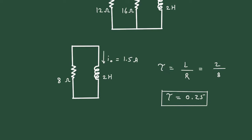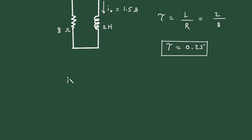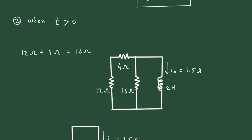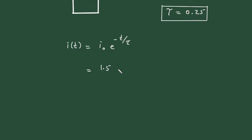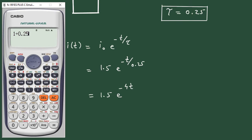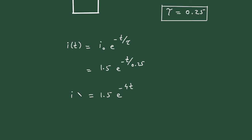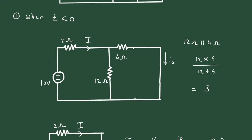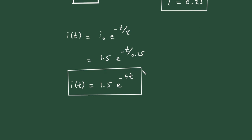Next we have to find I of t. I of t equals I(0) times e to the power of minus t divided by tau. The value of I(0) is 1.5 amperes and tau is 0.25. So this becomes 1.5 e to the power of minus 4t, because 1 divided by 0.25 equals 4. Therefore the final answer is I(t) = 1.5 e^(−4t).